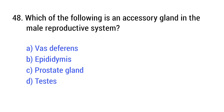Question number 48. Which of the following is an accessory gland in the male reproductive system? The right answer is option C: Prostate gland.